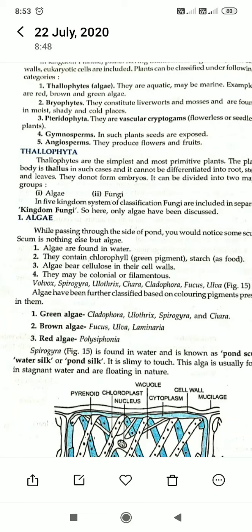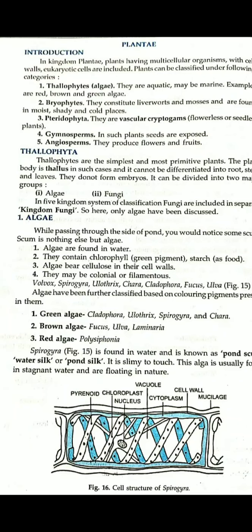Harmful activities of algae: some algae grow on walls and can damage historical buildings. Algae growth in water bodies causes loss of fishing value and changes in the taste and color of water, as well as bad smell. This concludes the category of Thallophytes. The next category, Bryophytes, will be covered in the next class.